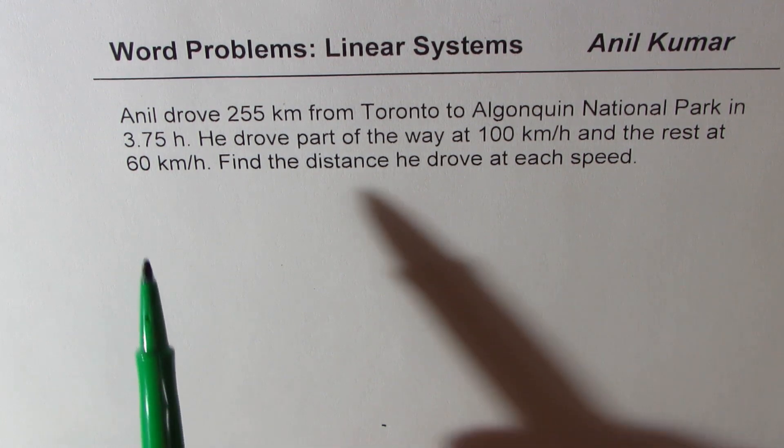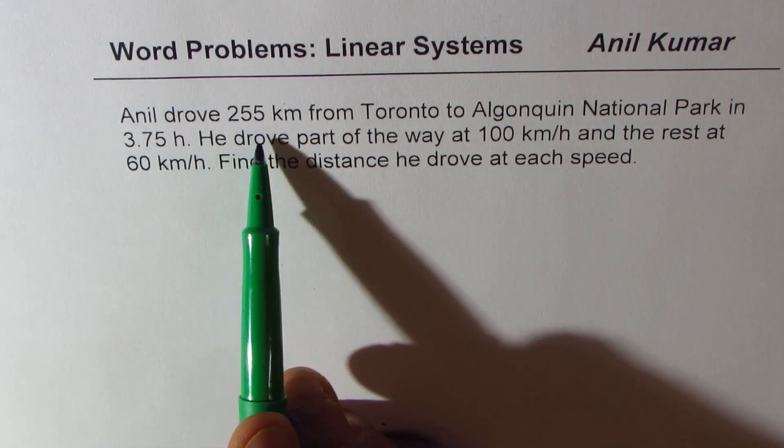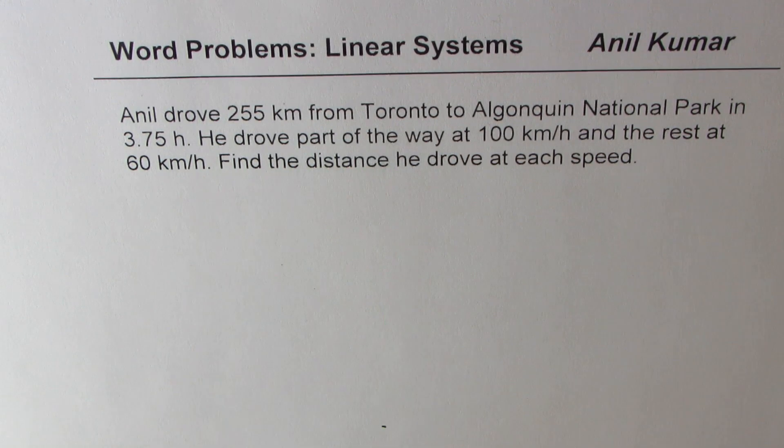The question here is: Anil drove 255 kilometers from Toronto to Algonquin National Park in 3.75 hours. He drove part of the way at 100 kilometers per hour and the rest at 60 kilometers per hour. Find the distance he drove at each speed.